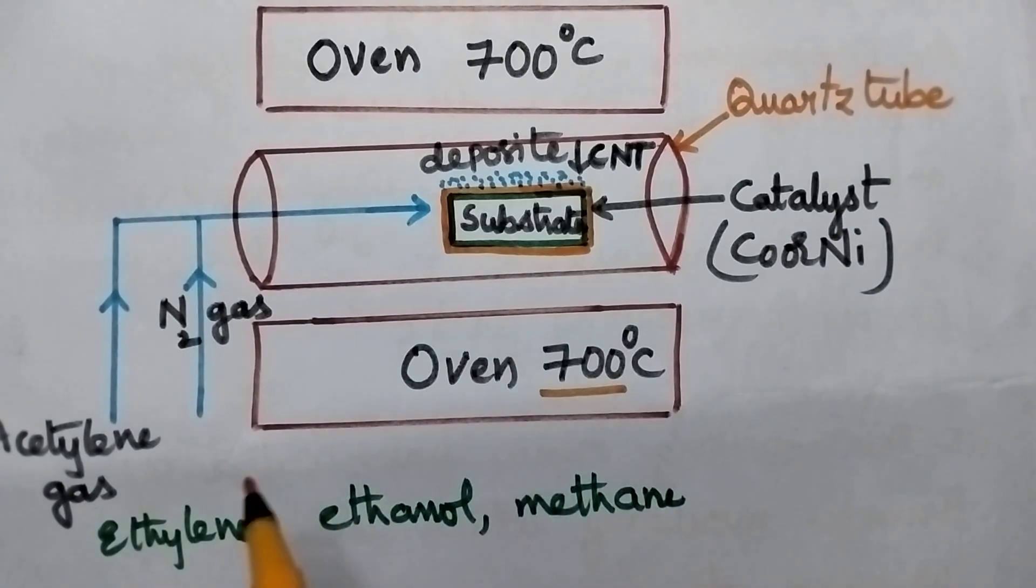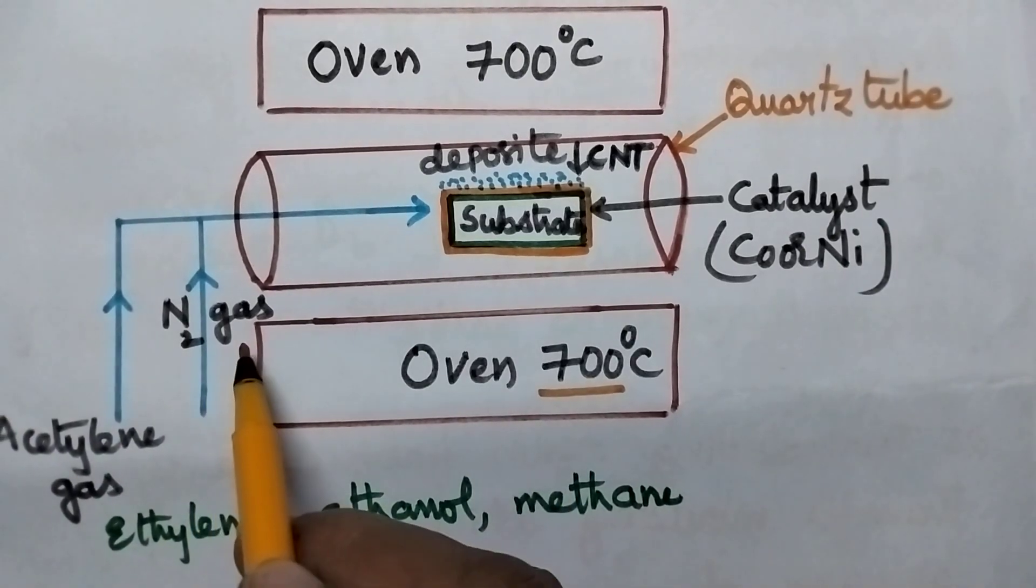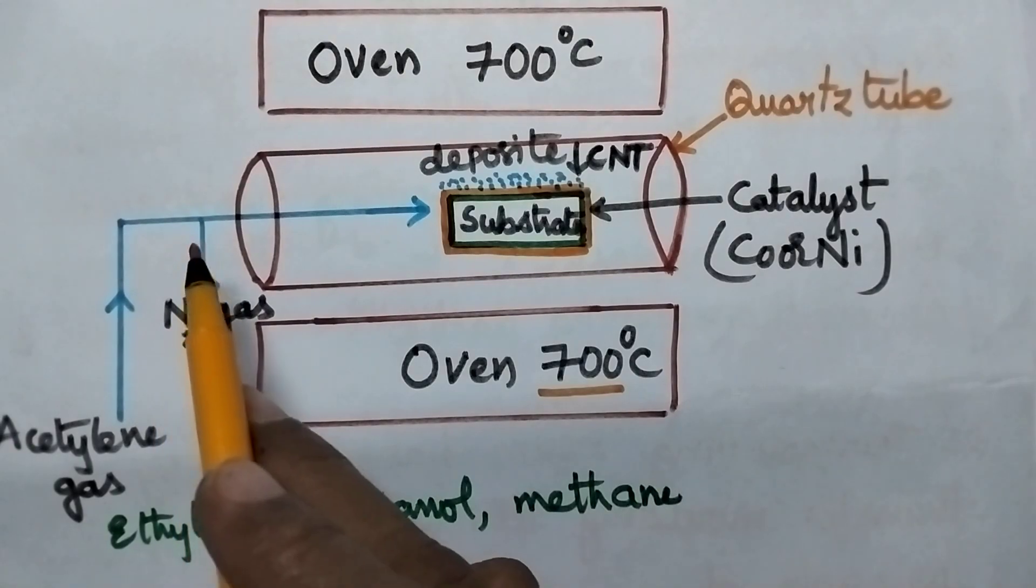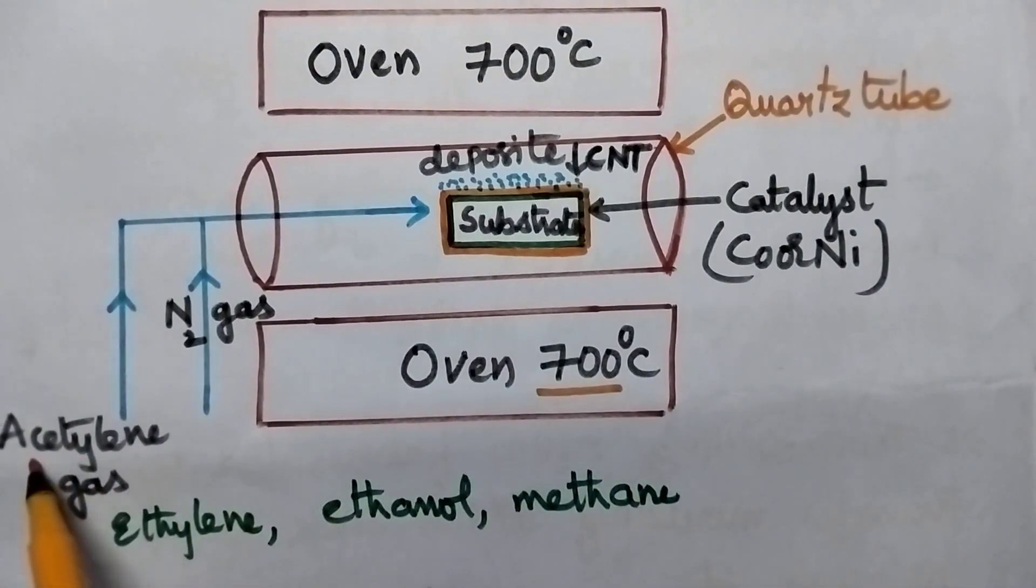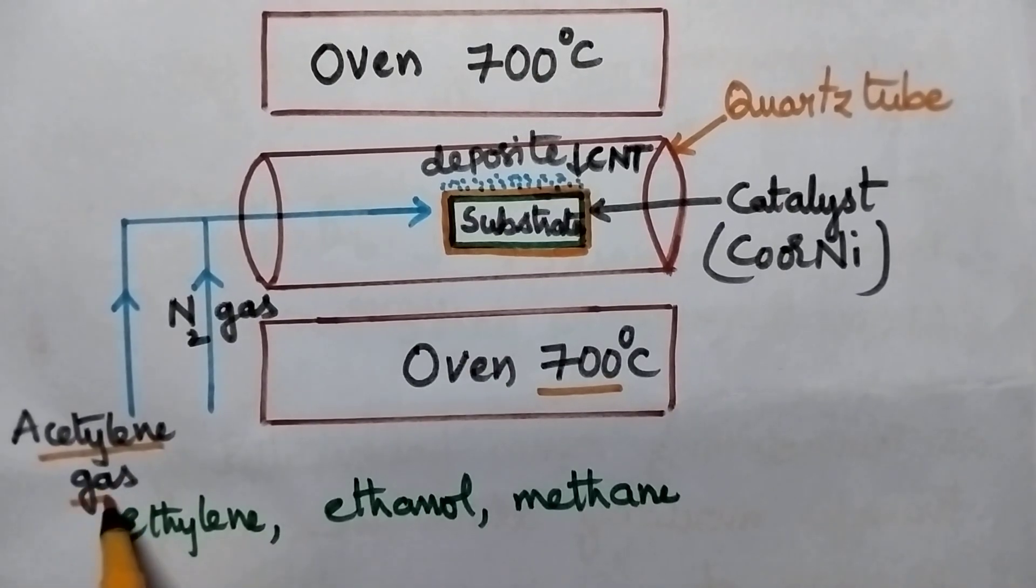At this moment, a mixture of gases such as nitrogen gas and acetylene gas will be passed into the quartz tube. Here, acetylene gas will act as the source of carbon.